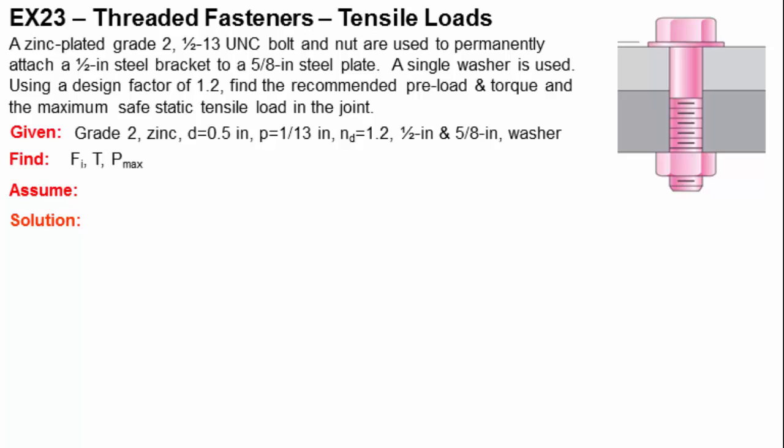What we're looking for, then, is the initial tension that we want to put in the joint or the joint preload, the torque required to achieve that initial tension, and the max static tensile load that can be applied after assembly before we encounter one of our failure modes. We need to assume that during assembly we're not going to fail.